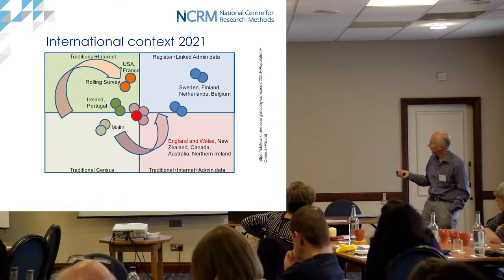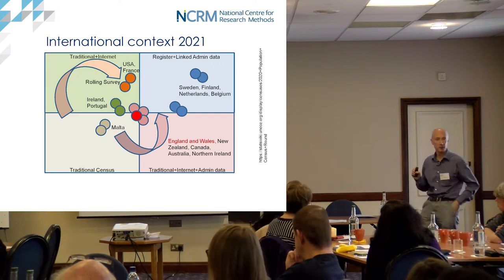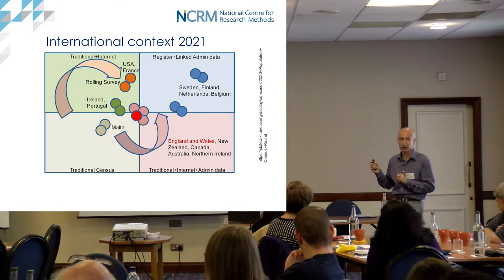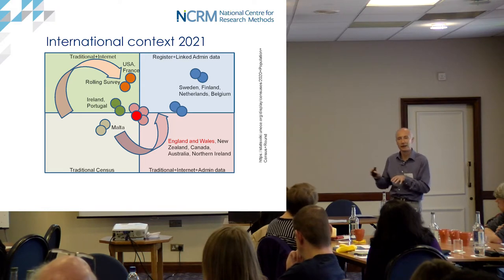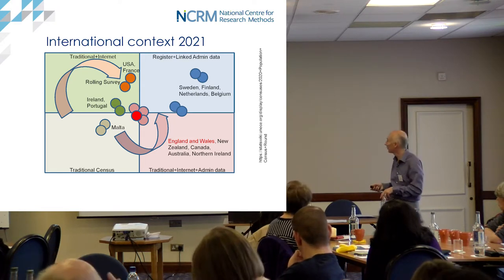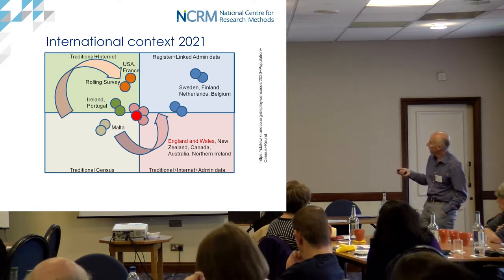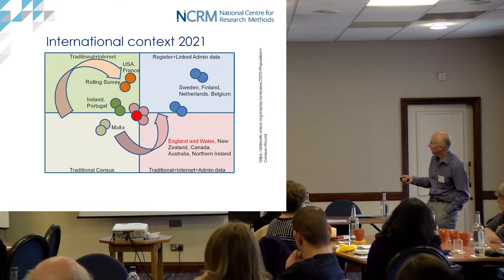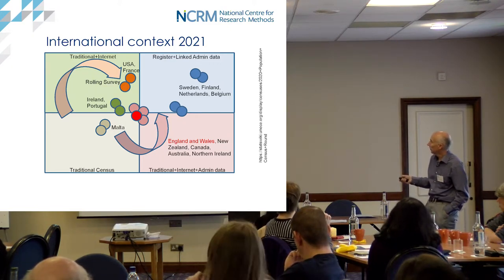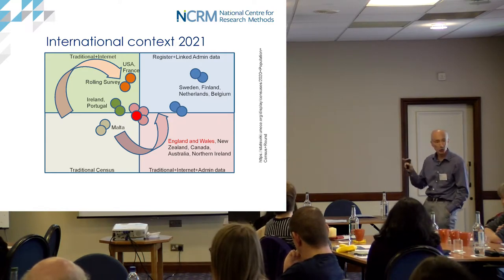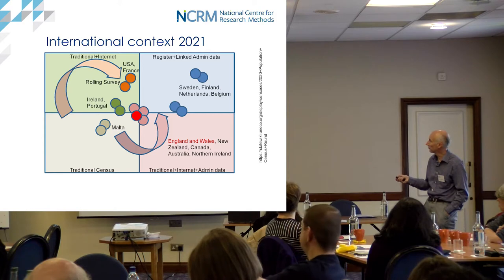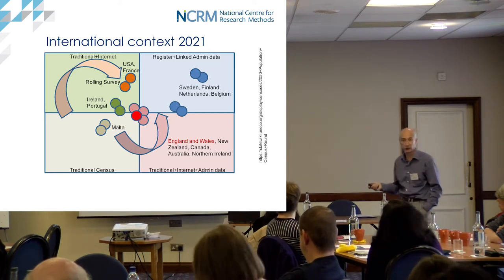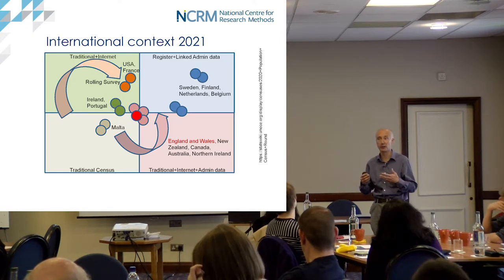That brings with it every caveat James introduced earlier, but also a whole host of opportunities about frequent data and the ability to answer new questions. From the national statistician's recommendations on 2021: increased use of administrative data and surveys to enhance statistics from 2021 and improve what happens thereafter, and an online census. We're effectively moving to the middle of the diagram - not in the top-right corner because there is no citizen identifier, but moving up towards a position with a foot in each corner.